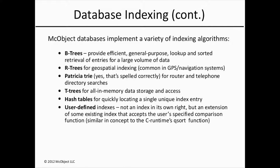T-trees are appropriate for all-in-memory data storage and access. Whereas the design goal of a B-tree is to minimize IO, the design goal of a T-tree is to minimize memory use. Hash tables can quickly locate a single unique index entry, and hash indexes can be faster and use less memory than either of the types of tree indexes. Custom indexes are B-trees that allow the application to define the collating sequence or sort order of the entries, rather than defaulting to a simple lexicographical or numerical sorting, and we'll look at examples of where controlling that comparison function could be useful.